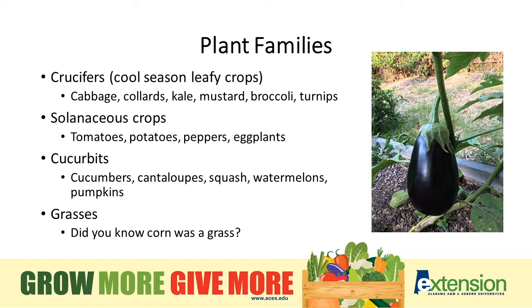Our solanaceous crops, or nightshades, include tomatoes, potatoes, peppers, and eggplants. Cucurbits include cucumbers, cantaloupes, squash, watermelons, and pumpkins. And our last category is grasses — and did you know that corn is actually classified as a grass?